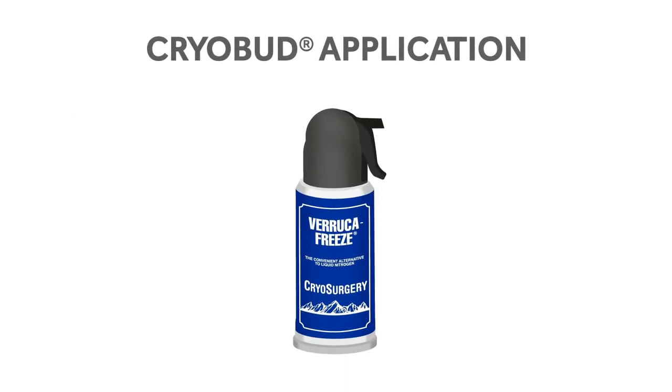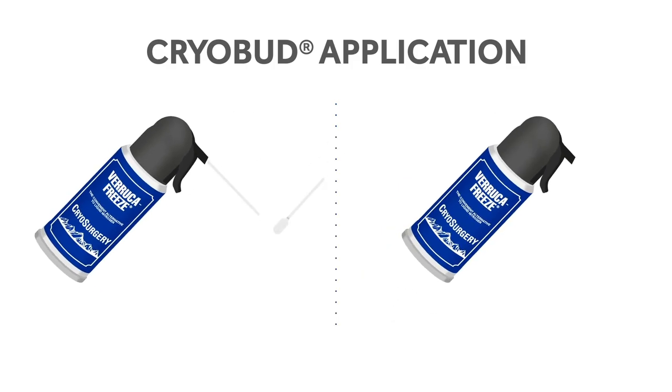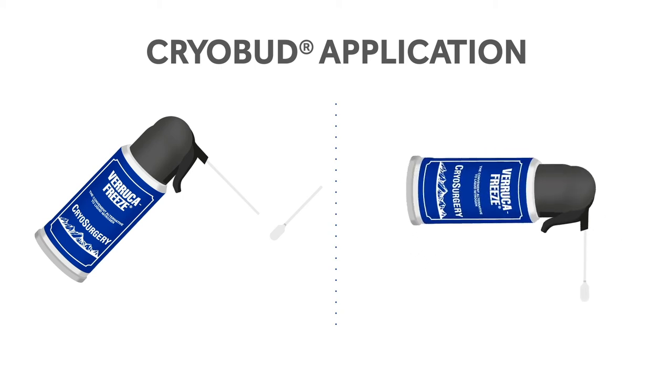When using the cryobud application, there are two methods of saturation: spray directly onto the bud or insert the bud into the nozzle. If using the inserted method, point the bud downward for optimal saturation. Gently press the trigger for 3 to 6 seconds or until the bud is saturated to the first drip point.